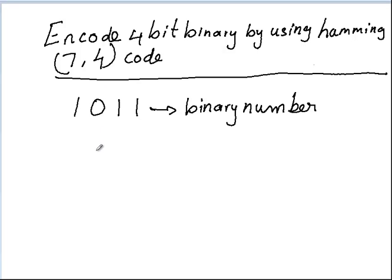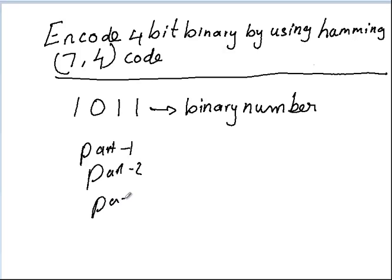We need to find three parity bits: parity bit one, parity bit two, and parity bit three. So how can we find out these parity bits?